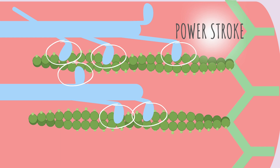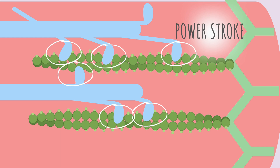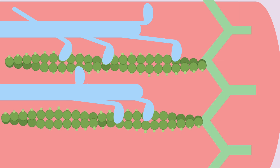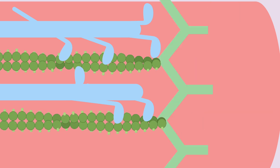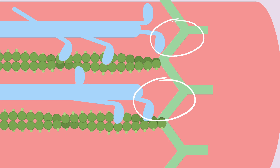You can kind of think of it like a paddle in water where actin is the water being pushed and myosin is the paddle pushing the water. Notice that after the actin is pushed by the power stroke, the myosin is closer to the Z lines. The closer the myosin is to the Z line, the more the muscle is contracting. This is important because you're going to need to identify a muscle contraction and a muscle relaxation on a sarcomere.